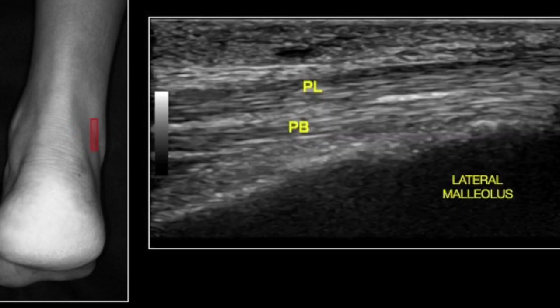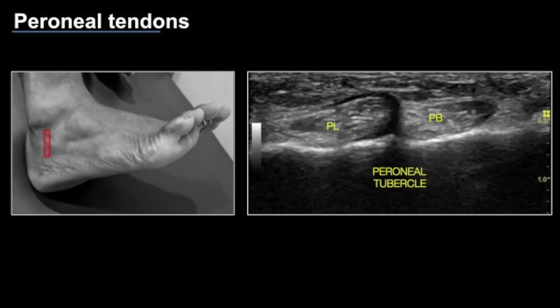On the long axis, the peroneal tendons show the typical fibrillary pattern set into bundles, with the smooth cortex of the lateral malleolus visible. In the inframalleolar segment, the peroneus longus is seen inferior to the peroneal tubercle and the peroneus brevis superior to it. In this case the peroneal tubercle is slightly shallow — this is an anatomical variant; some peroneal tubercles may be very prominent while others can be almost flat.